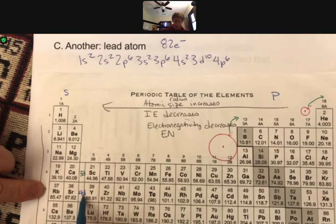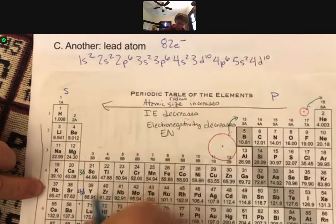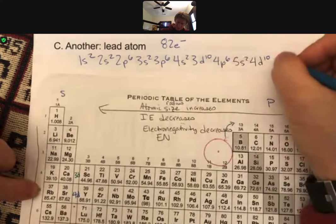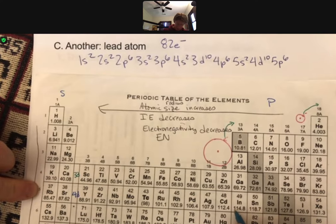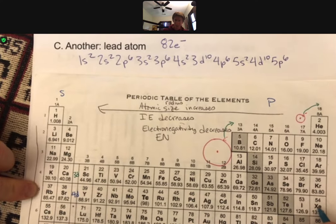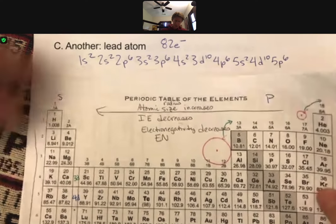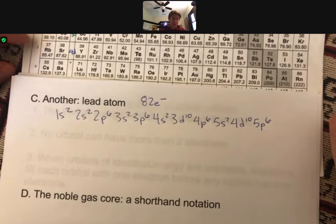5s, 4d, 5s2, 4d10 and then 5p. And that should be 5p should be element number 54. Let's see. So we just did 54 and that was 5s.